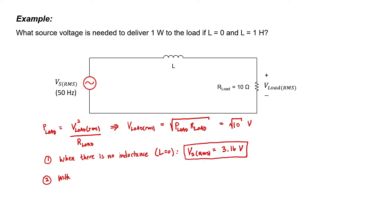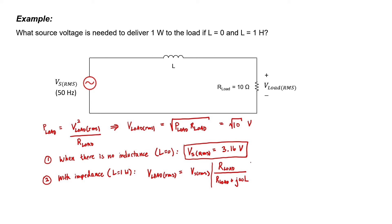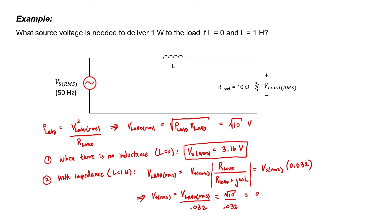Let's now consider the situation where there's a 1 Henry impedance on that line. I can use voltage division to write the load voltage in terms of the source voltage. I'm not interested in the phase angle, so I only need the absolute value across this voltage divider. That turns out to be 0.032. Since we know the load voltage, we can divide it by 0.032, and the RMS source voltage has to be 98.8 volts.